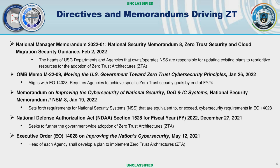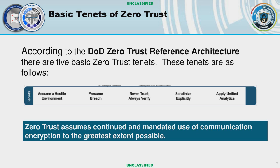NIST Special Publication 800-207 has some excellent resources — very good things going on with that. You'll see a lot of other things from federal government responses. A lot of it comes from NIST, but some needs to be specific to the DOD. One of those is the DOD Zero Trust Reference Architecture.